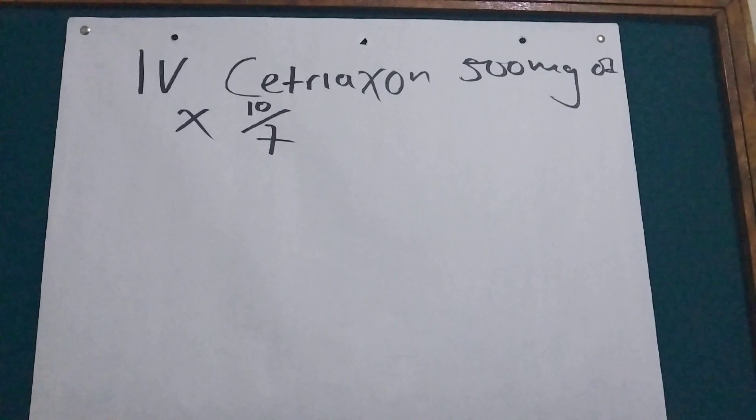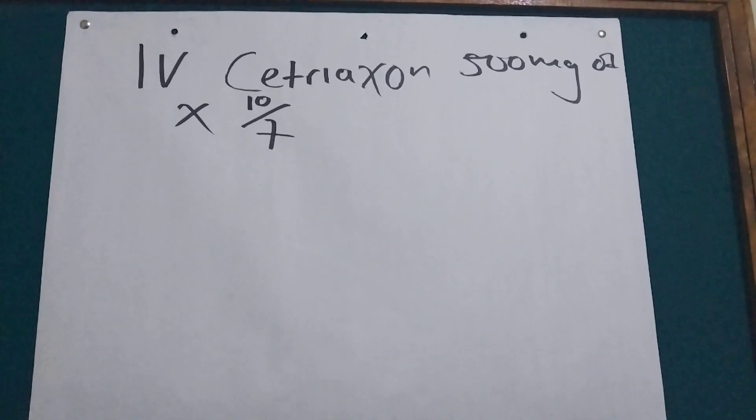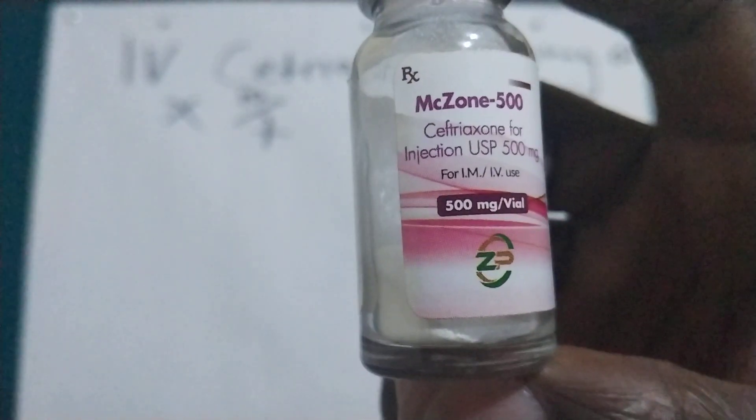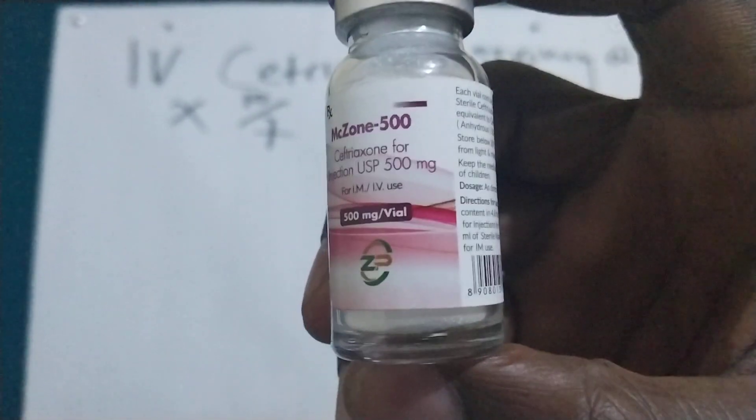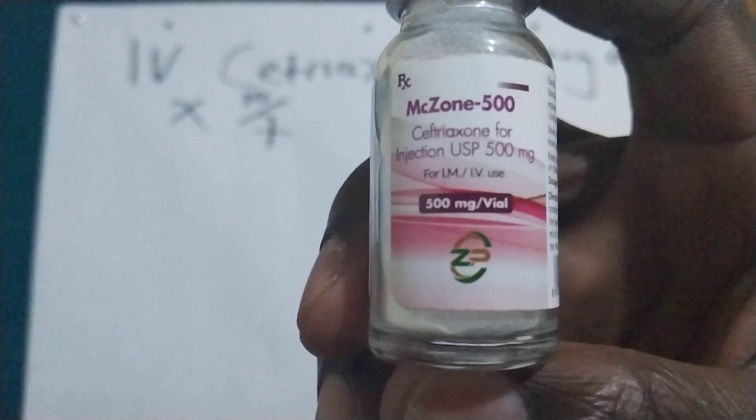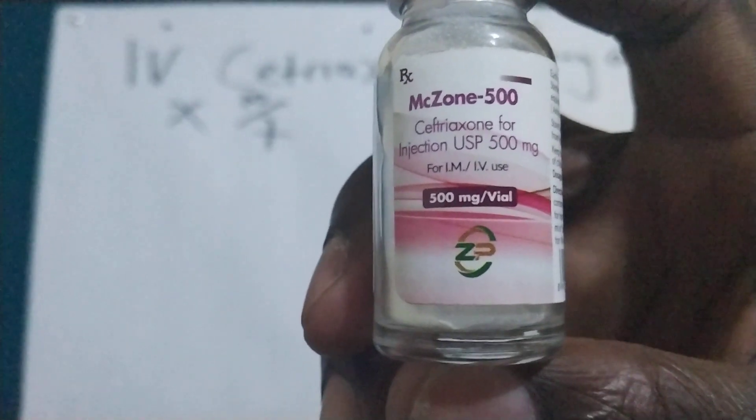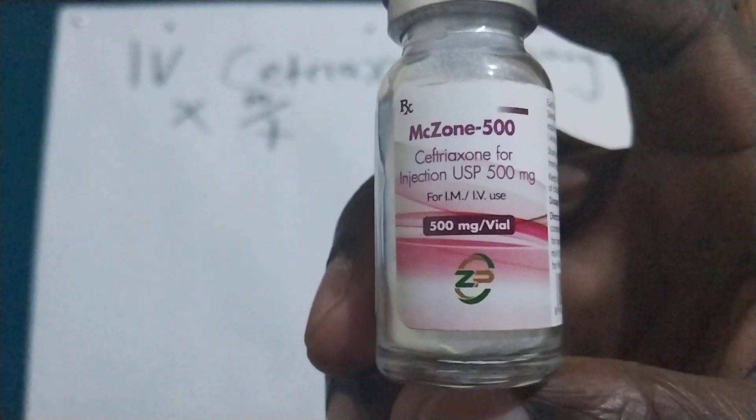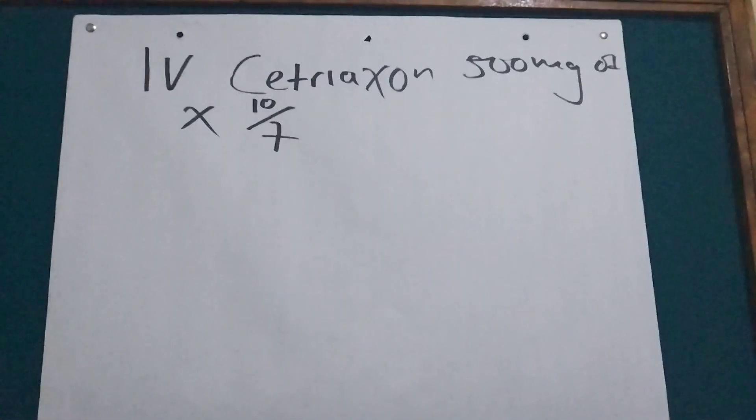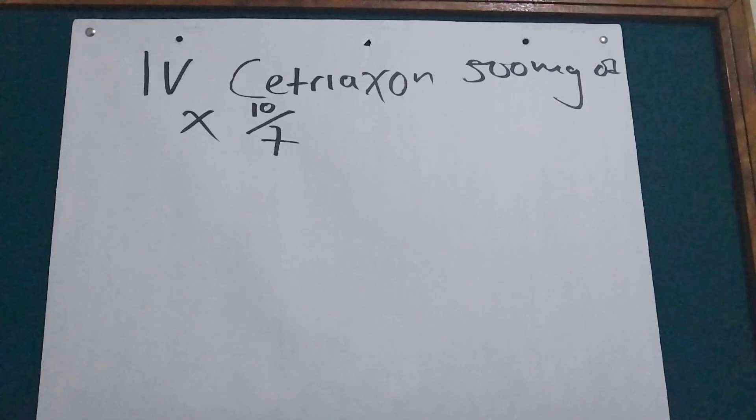So this is the vial of Ceftriaxon 500 milligram as you can see, 500 milligram per vial and you can give it IM or IV. So what we are going to do, we are first going to dilute and then we aspirate.